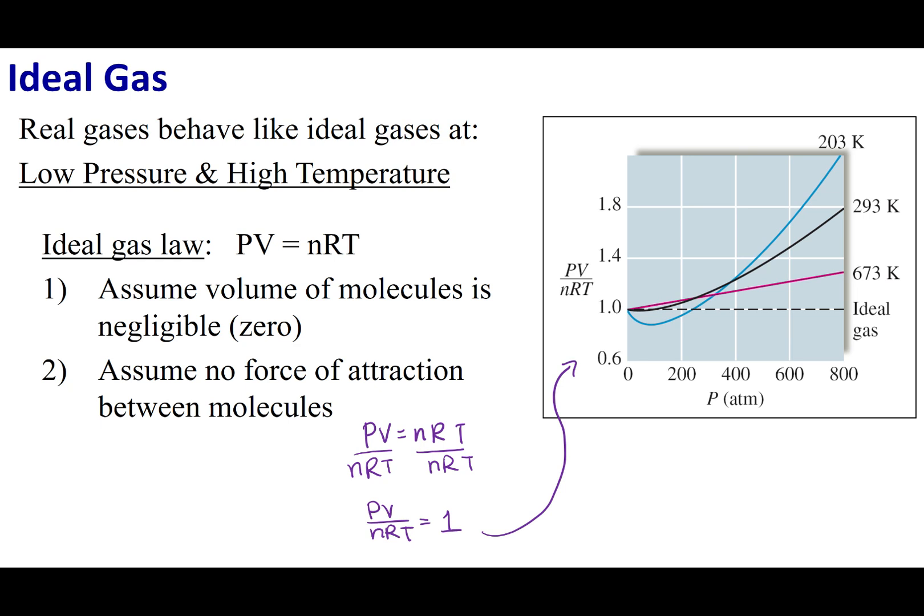So what we have is PV equals nRT, and this line at 1 represents an ideal gas. Now what I'm going to do is take a look at real gases, and they are depicted in the blue, black, and red lines. Now what you will see is the closer it is to this one line, the more that gas is behaving ideally.